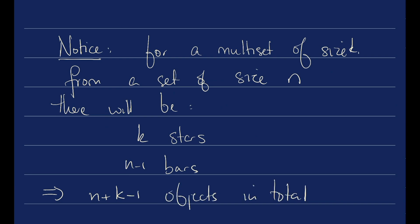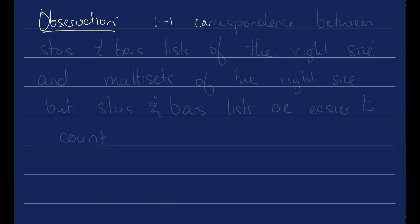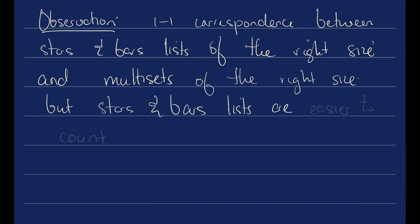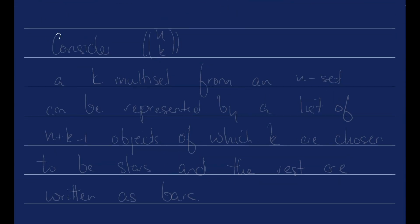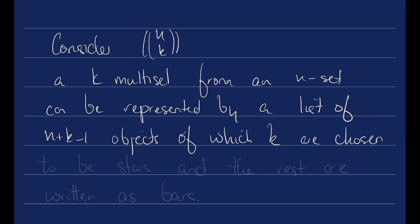Let's talk about where we're going with this. Here's our observation. We have a one-to-one correspondence between stars and bars lists of the right size and multi-sets of the right size. But stars and bars lists are easier to count. So consider n multi-choose k. A k multi-set from an n set can be represented by a list of n plus k minus 1 objects, of which k are chosen to be stars and the rest are written as bars.